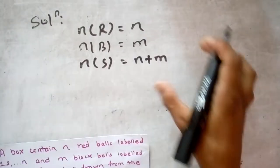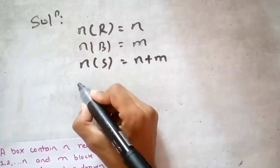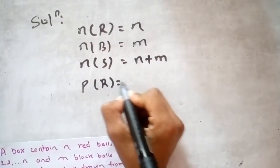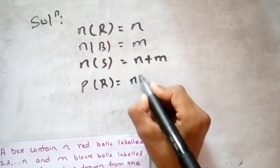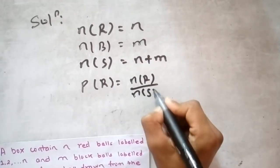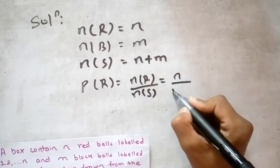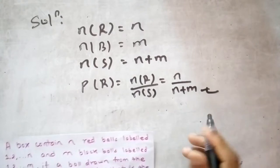The total is n plus m. The probability of red equals n by n+m, which is n divided by n plus m.